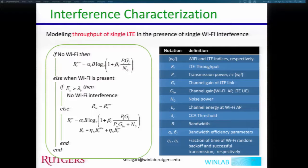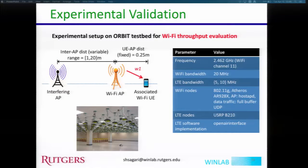Once we had this model, we needed experimental validation. We considered one particular topology on the Orbit testbed and performed throughput performance checks for Wi-Fi throughput when interference was present — either from another Wi-Fi or from LTE. The distance between the Wi-Fi link and the LTE/UE was fixed at 0.25, and the distance between the interfering AP and the Wi-Fi link was varied from 1 to 20 meters. The experiment was conducted at 2.4 GHz with Wi-Fi bandwidths of 5 and 10 MHz, and LTE was implemented using Open Air Interface.